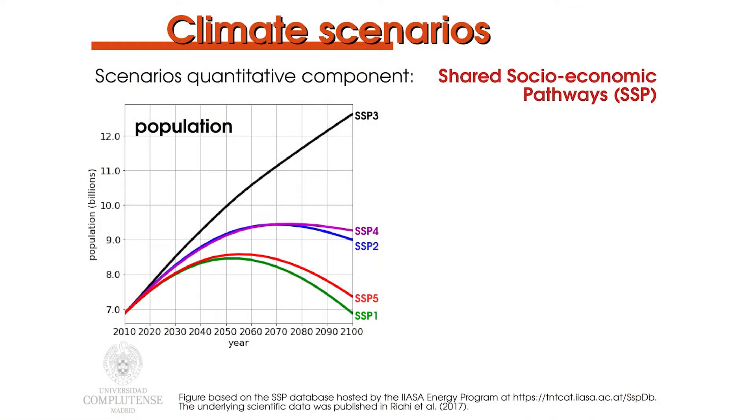The quantitative component of the scenario provides a translation of the narratives into the evolution of elements such as population, education, urbanization and economic development. As a result of the narrative, population is lowest in SSP 1 and SSP 5, with a growing population that levels off by mid-century and which is reduced to 7 billion at the end of it.